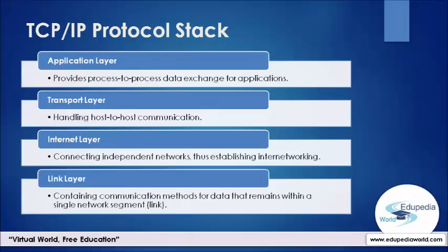Taking the layers from lowest to highest, the first layer is the link layer. It contains the communication method for data that remains within a single network segment, also called a link. This layer handles the transfer of data across the network media.